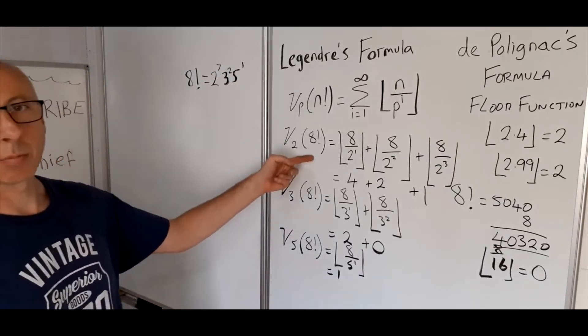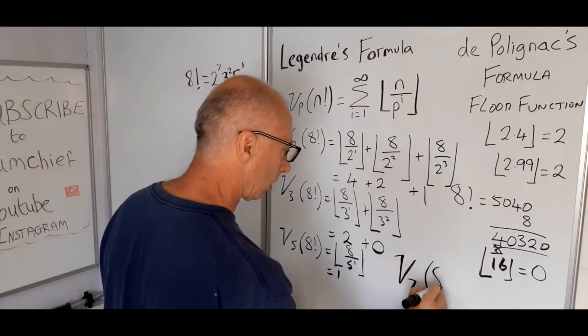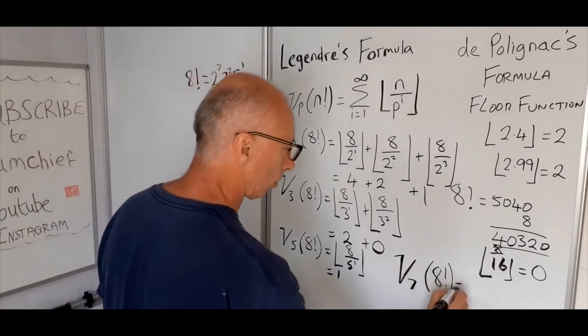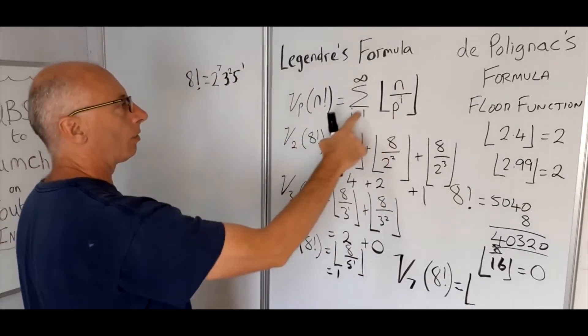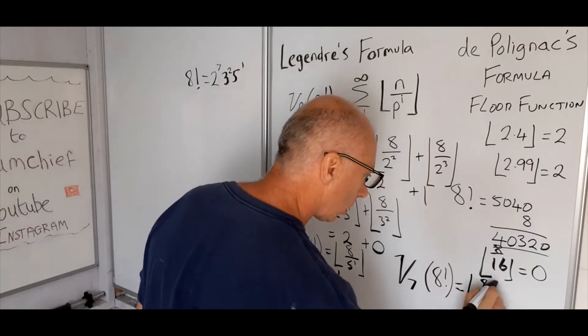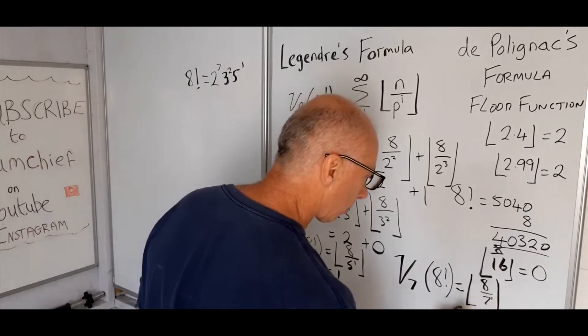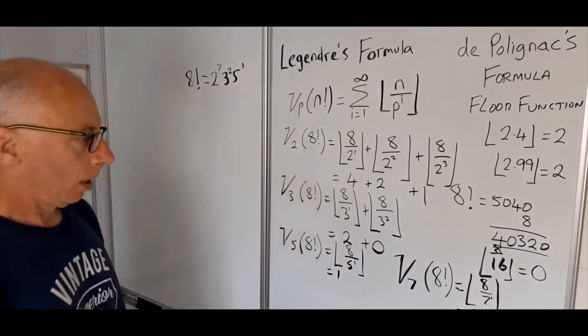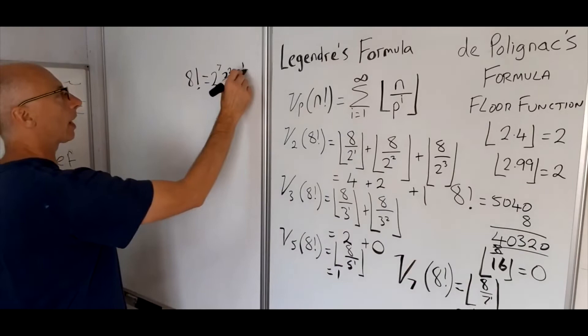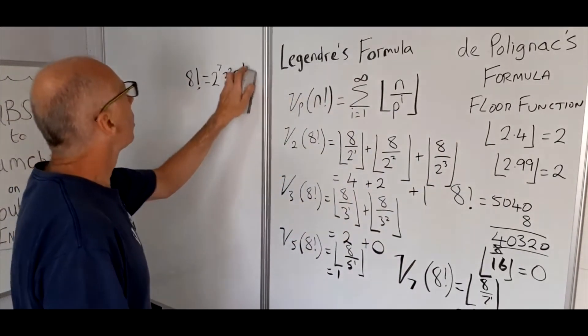And then the next and the last prime factor of 8 is 7. So nu_7 of 8 factorial. So the Legendre's formula for 7 is just going to give us 1, isn't it? One of our 1 value here, 8 divided by 7 to the power of 1. So that's just going to give us 1. So when we get to 7 to the power of 2, that's going to give us 49, we're just going to get 0, so they're all 0 after that. 7 to the power of 1.